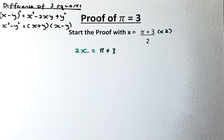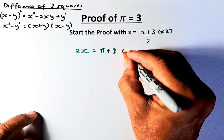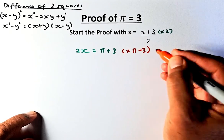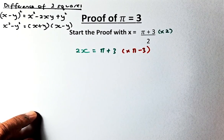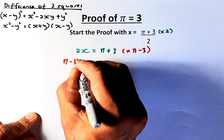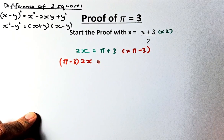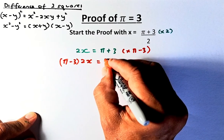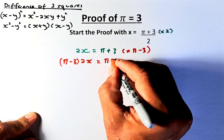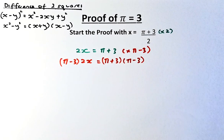Now we multiply both sides of the equation by (pi minus 3). So the left-hand side becomes (pi minus 3) times 2x, and the right-hand side becomes (pi plus 3)(pi minus 3).